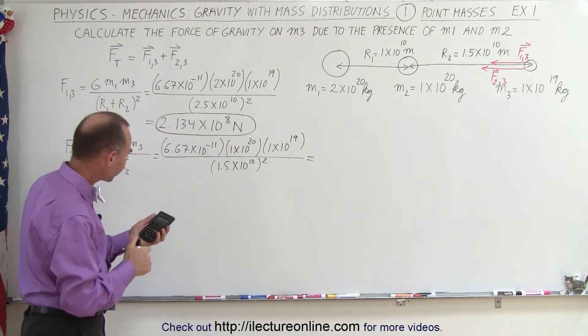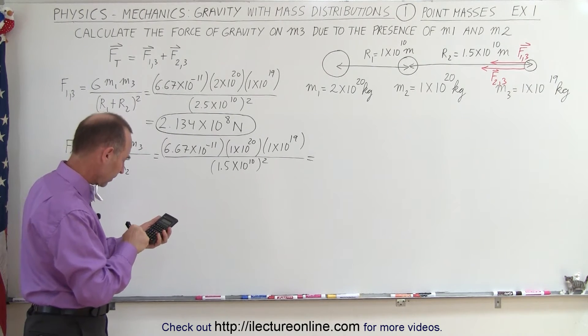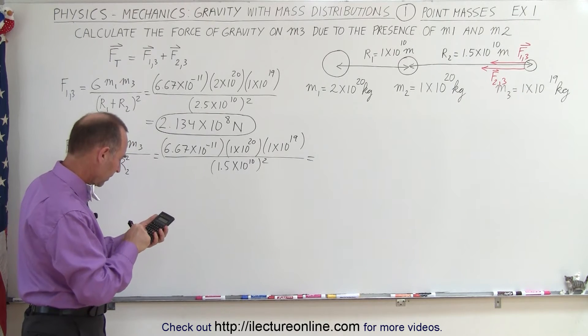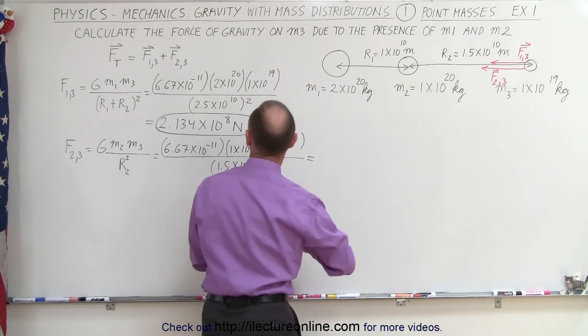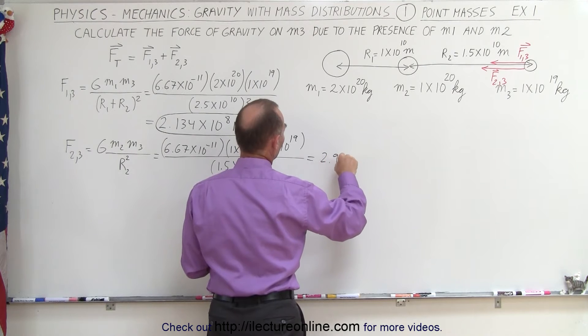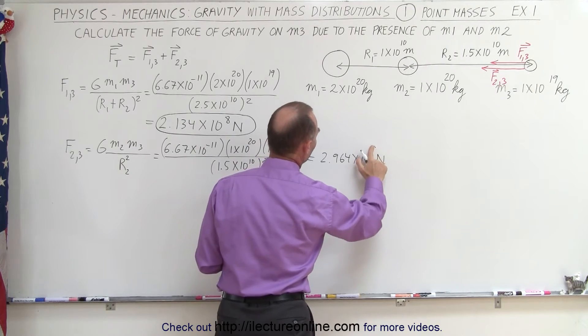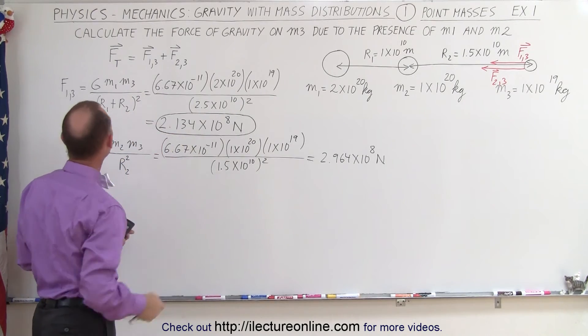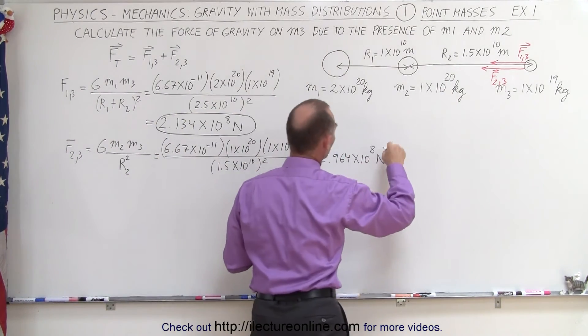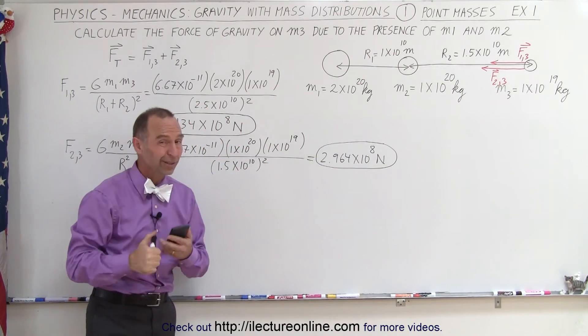Let's see what that's equal to. And that becomes 2.964 times 10 to the 8 newtons. And as we predicted, just a little bit bigger than the force between 1 and 3 because it's that much closer. And notice that the force of gravity depends upon 1 over the distance squared, so that has a bigger impact.